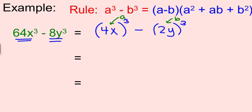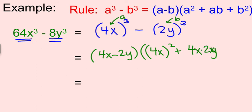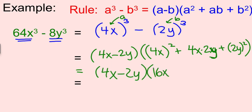I'll be very careful on this problem. So now I say 4x minus 2y, so that's A minus B, parentheses, 4x² plus 4x times 2y plus 2y². Now we clean up that second parentheses. 4x minus 2y. 4x times 4x is 16x². 4x times 2y is 8xy. And then 2y times 2y is 4y².